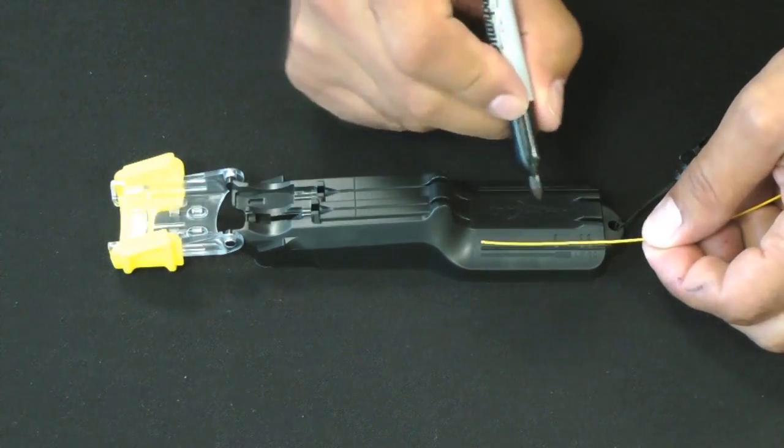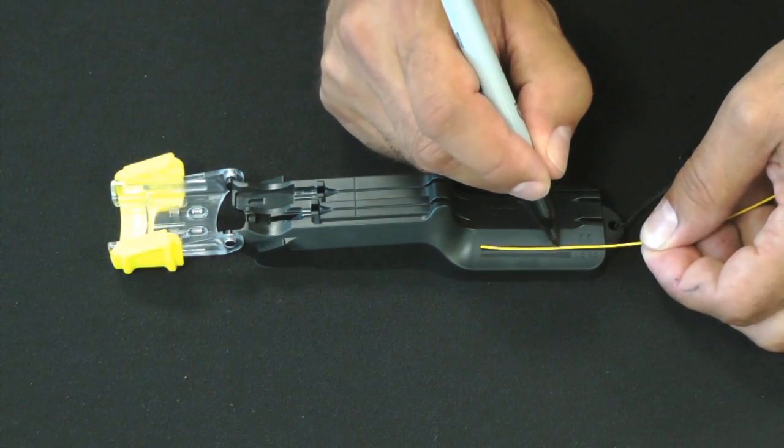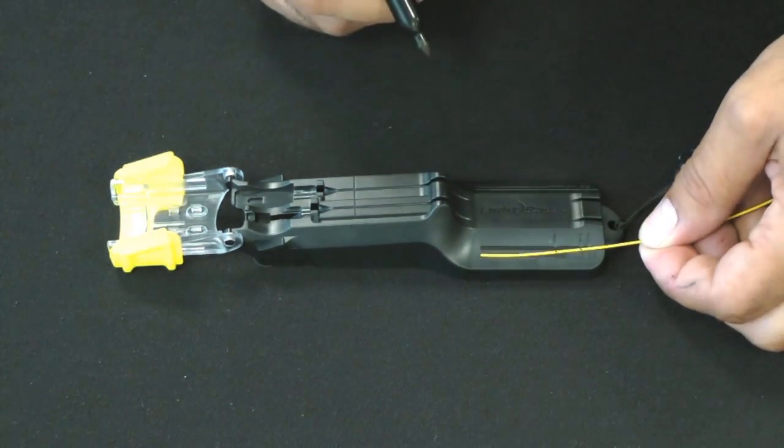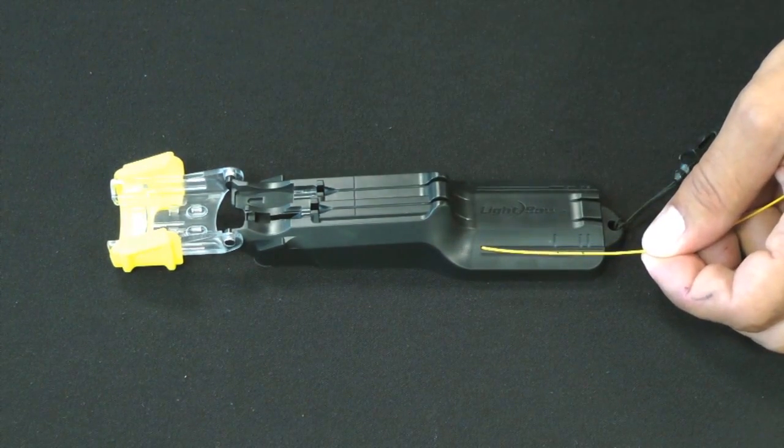A strip template is also located on the side of the termination tool, in the event the strip template card is misplaced or unavailable. Both SC and LC lengths are represented.